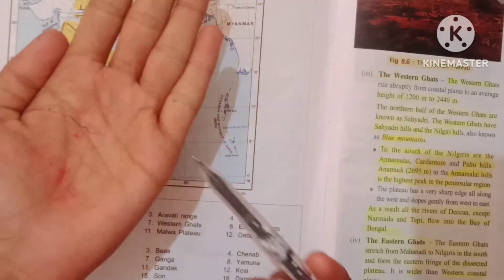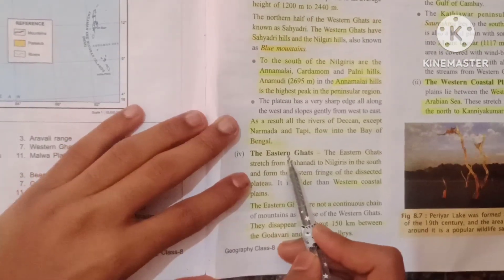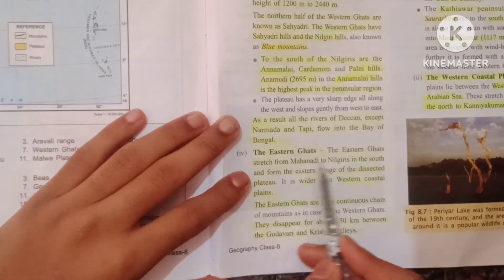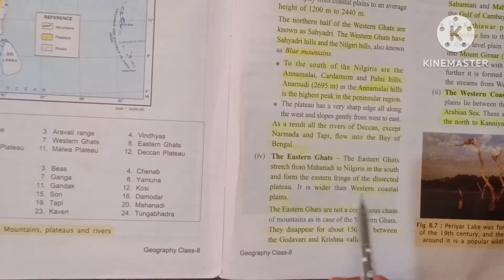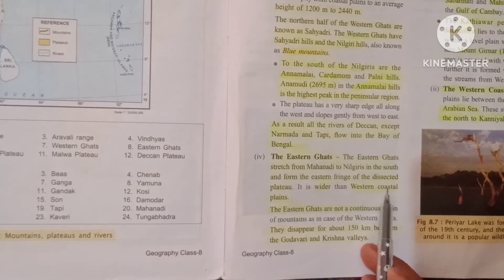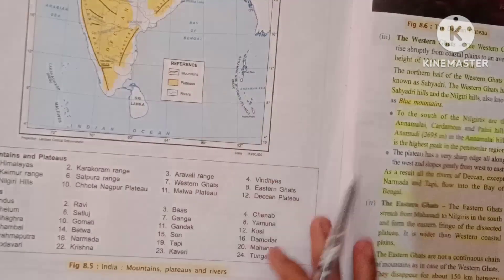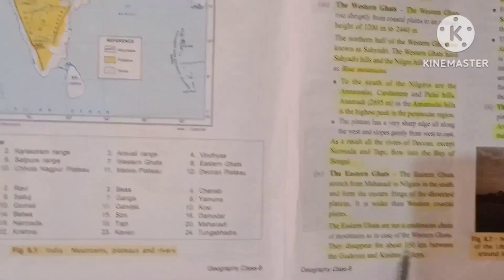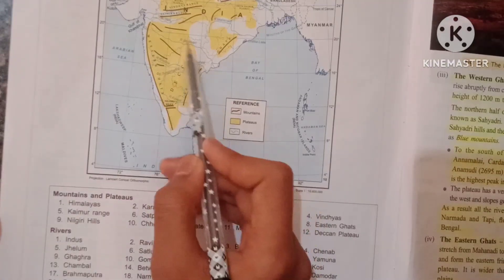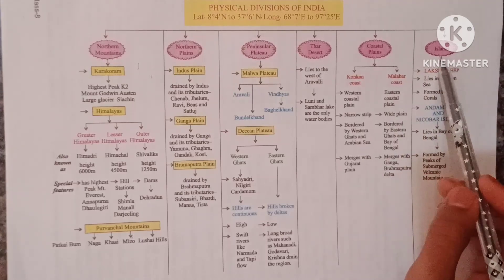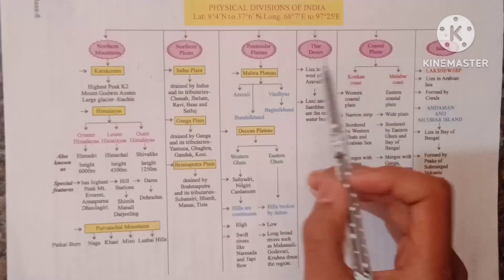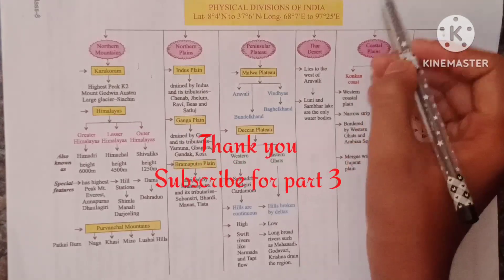The Eastern Ghats stretch from the Mahanadi to the Nilgiris. They are wider and provide the eastern coast, but they are not continuous — they break and disappear about 150 kilometers from where the Krishna and Godavari rivers meet them. The next part of the video will discuss the coastal plains and highland regions.